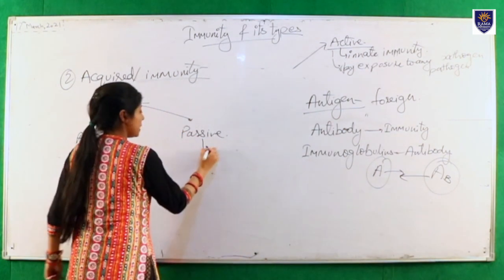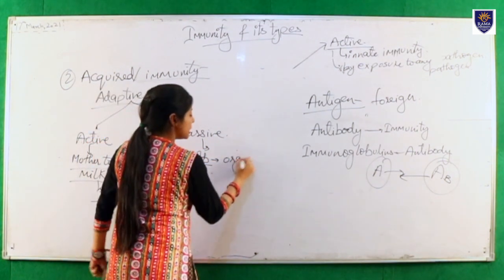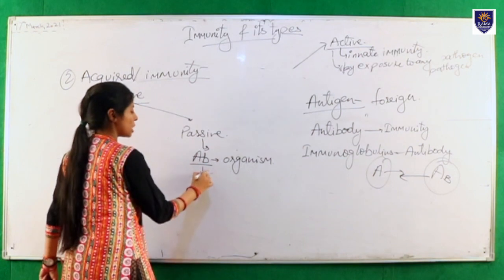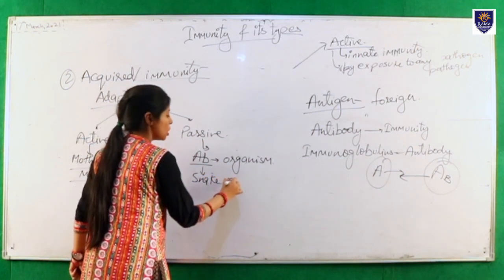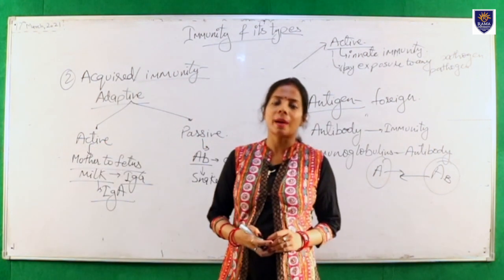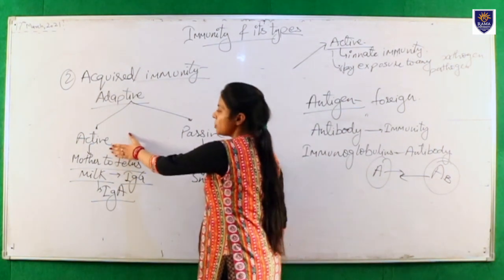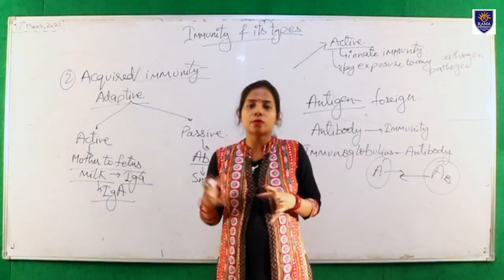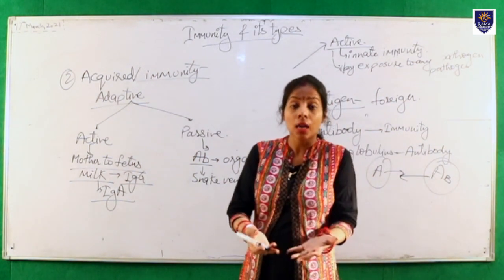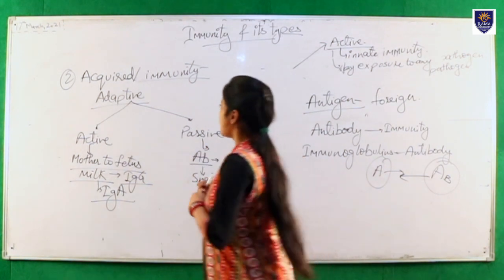Passive acquired immunity is when we directly inject antibodies into an organism. For example, in the case of snake venom or any emergency condition where we provide an antidote — that is passive adaptive or passive acquired immunity. So active acquired immunity is getting immunity from outside directly, and passive acquired immunity is injecting antibodies for a particular antigen.